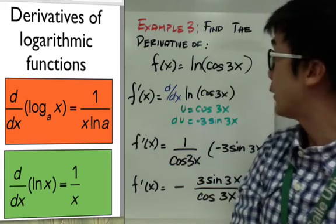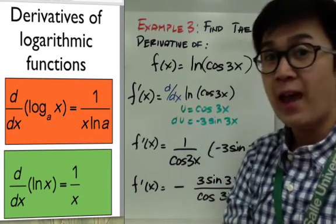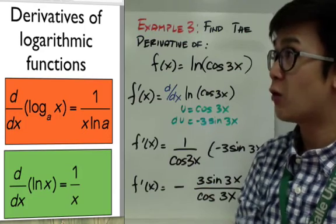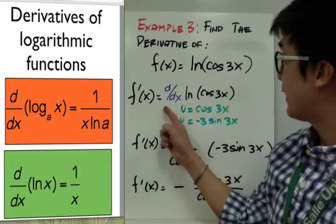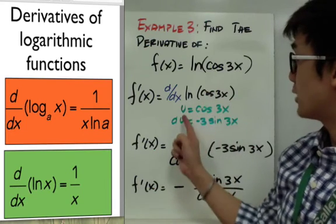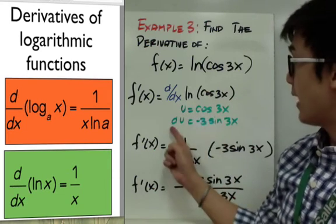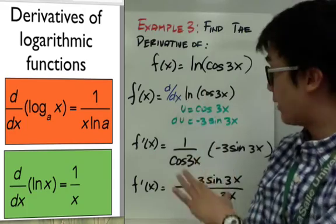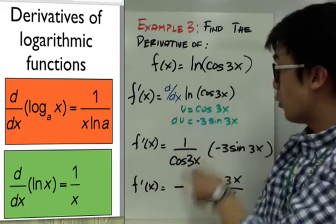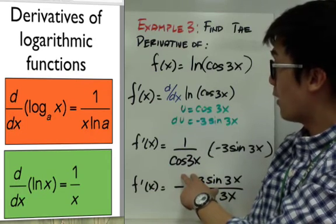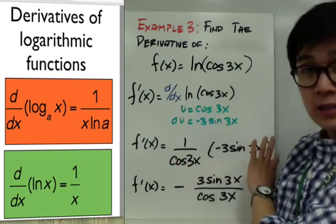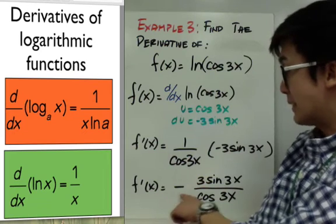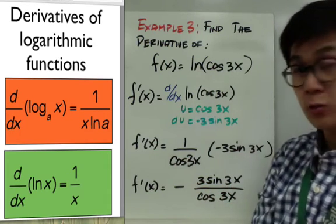On our third example, we use a function in terms of natural logarithm. f(x) equals ln(cos 3x). Using the formula for the derivative of ln, u is cos(3x) and du is negative 3·sin(3x). Since the derivative of ln(x) is 1 over x, we get 1 over cos(3x) times negative 3·sin(3x). So f prime of x simplifies to negative 3·sin(3x) over cos(3x).